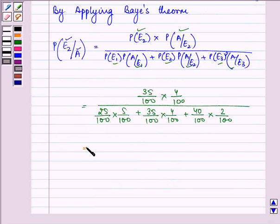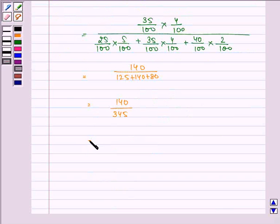So on simplifying it, we have 140 upon 125 plus 140 plus 80, which gives us 140 upon 345, which is further equal to 28 upon 69.